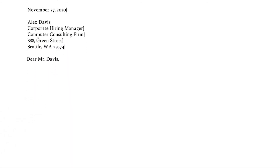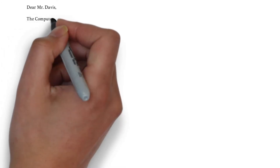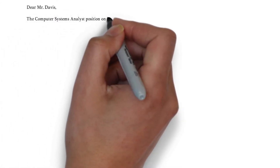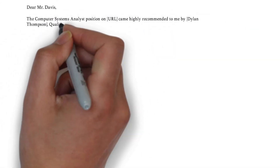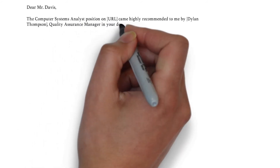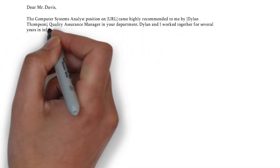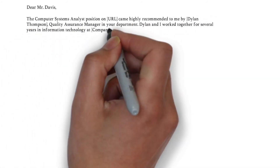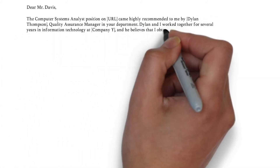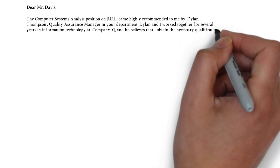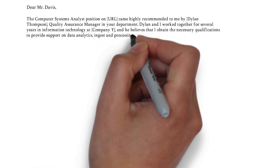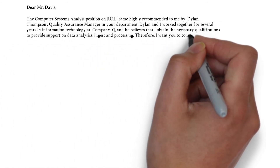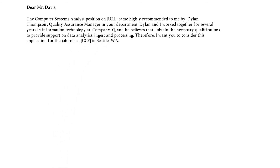In the first paragraph, also called the introduction, you can start off by mentioning your mutual connection if you have one. If not, you can show your interest for the position and computer consulting firm you apply for. Try to convince the reader in one sentence that you are qualified to contribute and support their objectives.